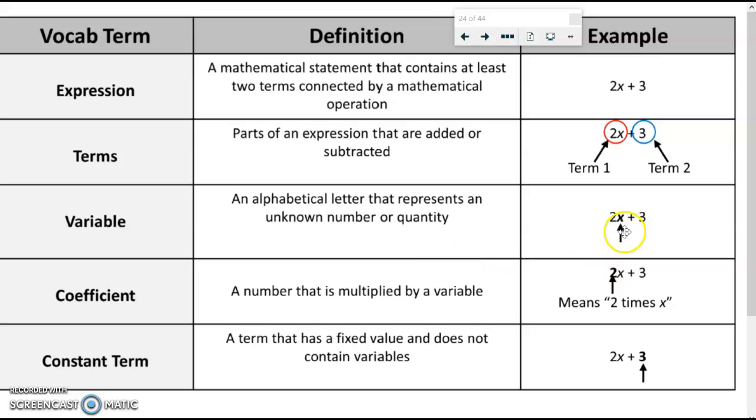Variable, which is an unknown value. Coefficient, the number in front of the variable. Constant terms. We have a term that doesn't have any variables to it. So let's take a look at a few examples here.